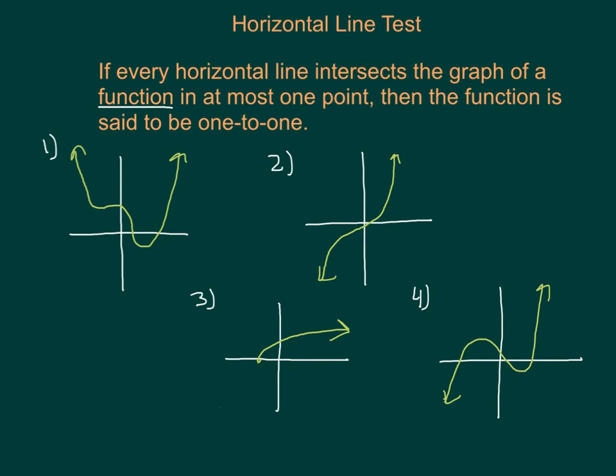One of the ways we have to determine if a function is one-to-one is the horizontal line test. It's important to remember that we are talking about functions first, so everything must have already passed the vertical line test. What the horizontal line test says is that if every horizontal line intersects the graph of a function in at most one point, then the function is said to be one-to-one.